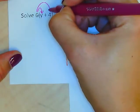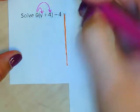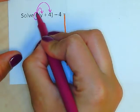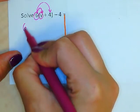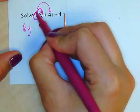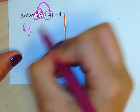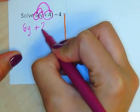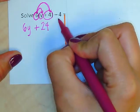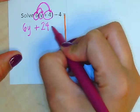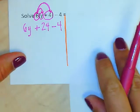So I'm going to distribute the 6 into here. 6 times y is 6y. 6 times positive 4 is plus 24. That minus 4 wasn't part of the multiplication, so I just bring it down.